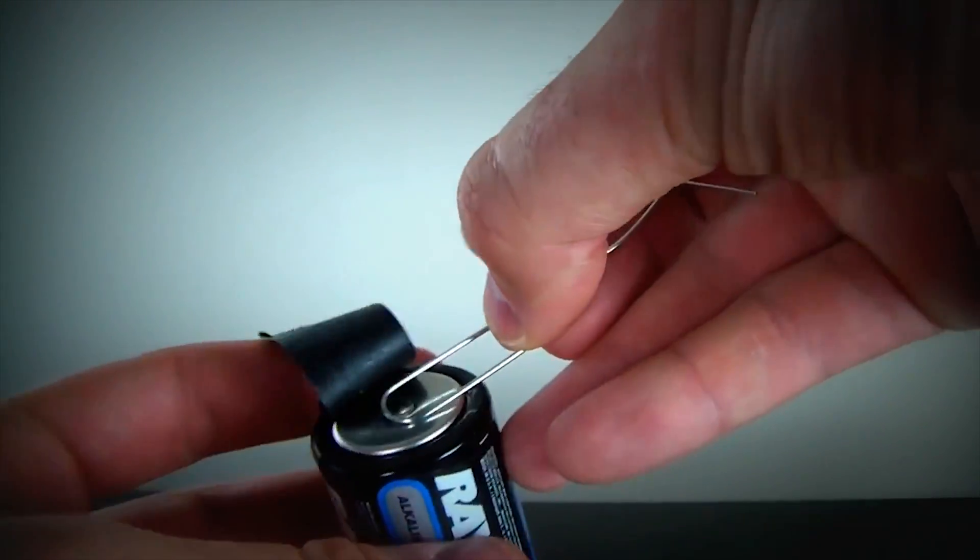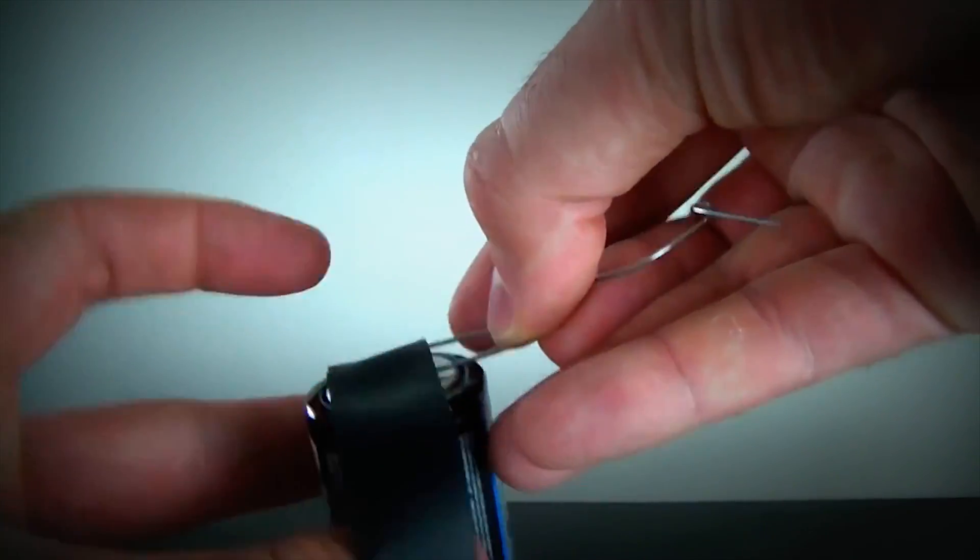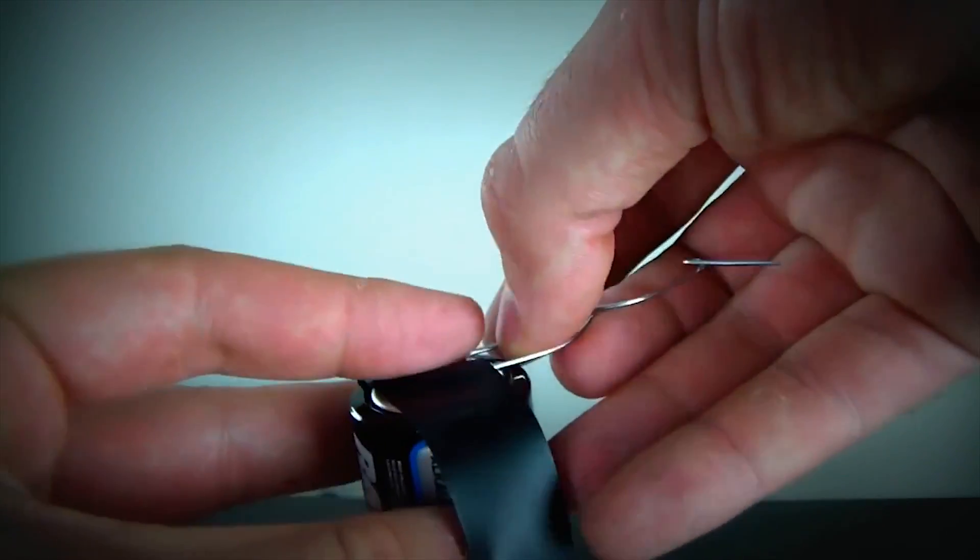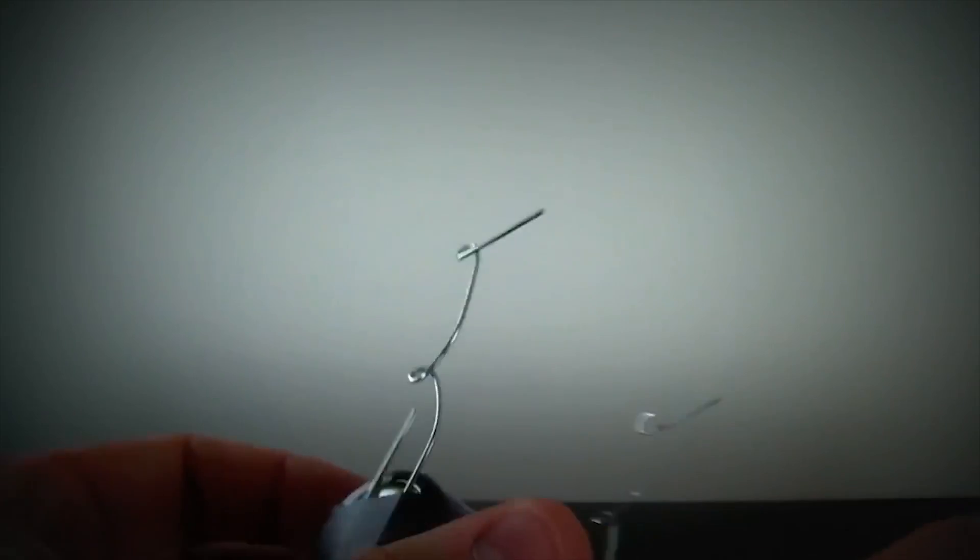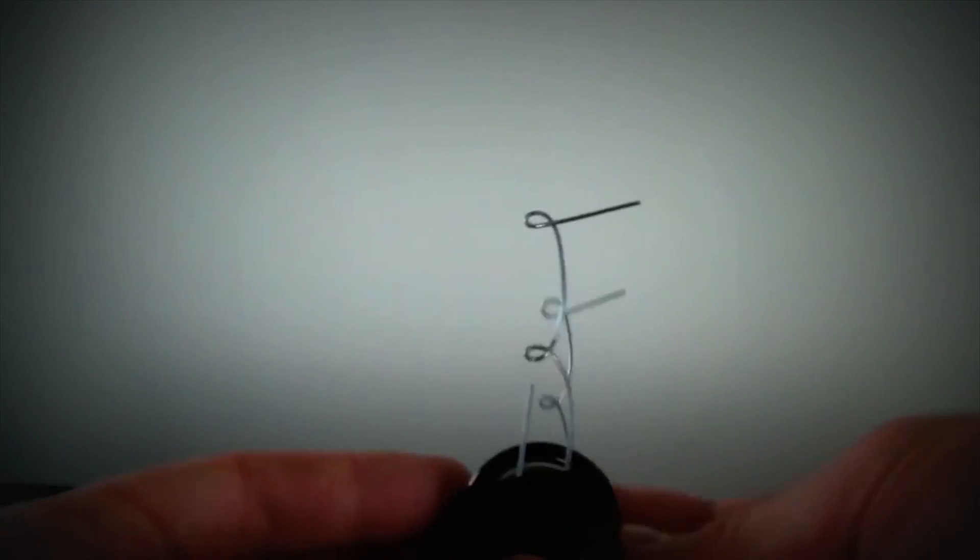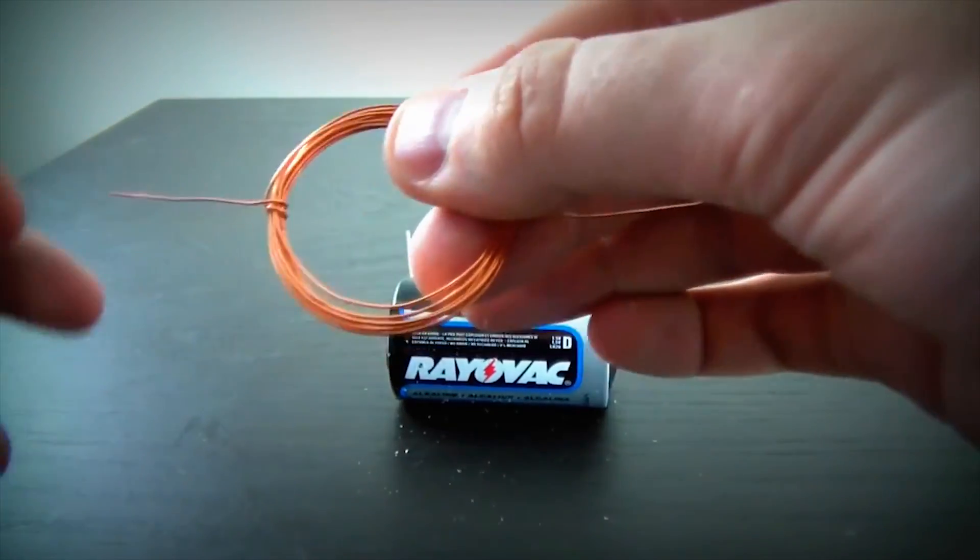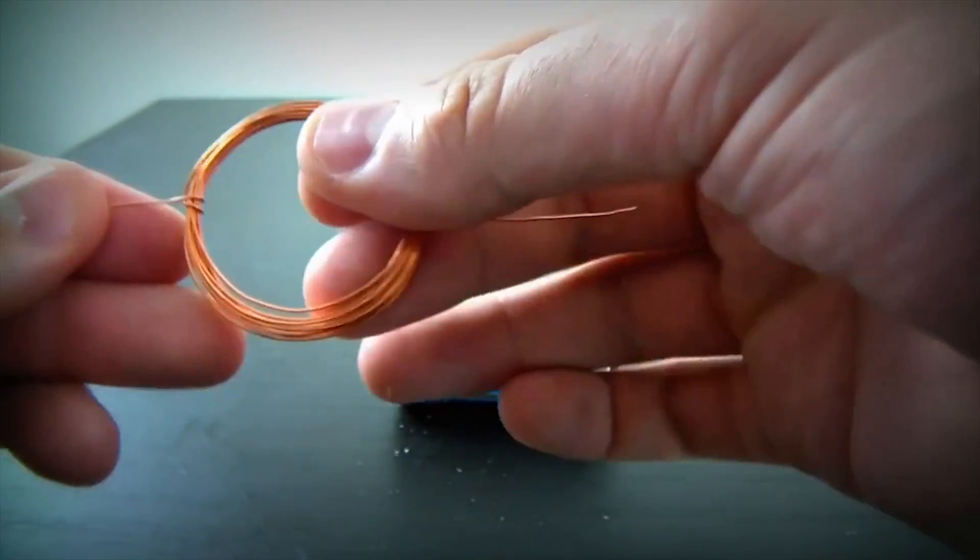Then get another paper clip, put it next to the circles, and tape it up. So, you see they are on the same level and stuff. Alright. Then we gonna get our wire. Make sure these two lines are straight.